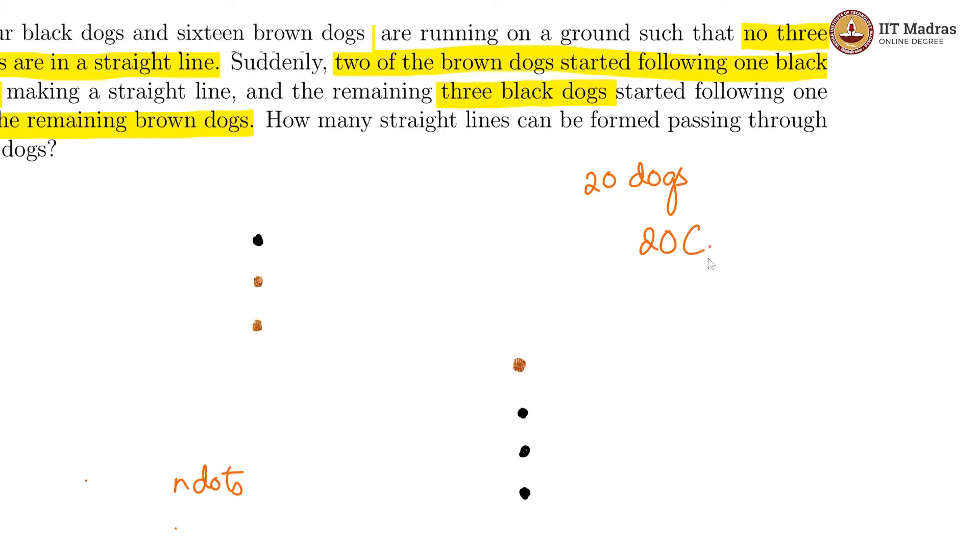which is 20C2 minus the number of lines which should have come from this, which is 3C2, but we include the one line that is all coming from this particular 3 dogs being in a straight line. So we will add 1.